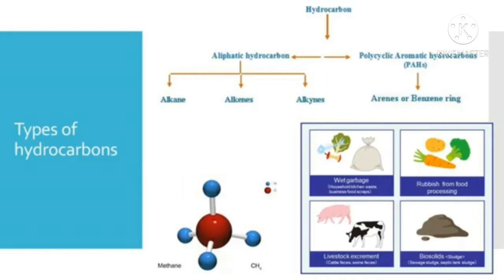Methane is the simplest hydrocarbon in which four hydrogen atoms are linked with one carbon atom. It is a colorless, odorless and inflammable gas. It is an eco-friendly fuel because it does not produce any harmful products. It is used as a fuel in electricity generation. Methane is also known as marsh gas as it is present in marshes.